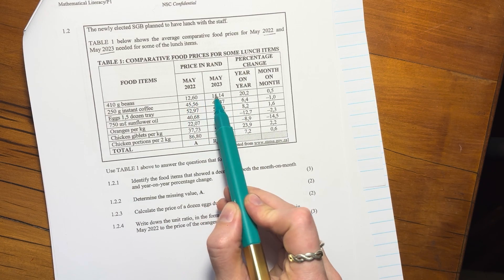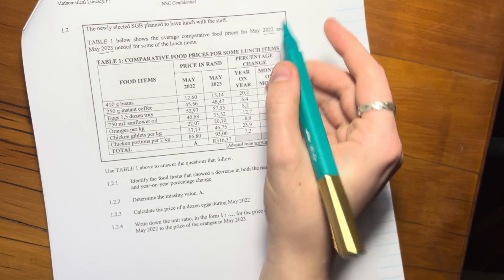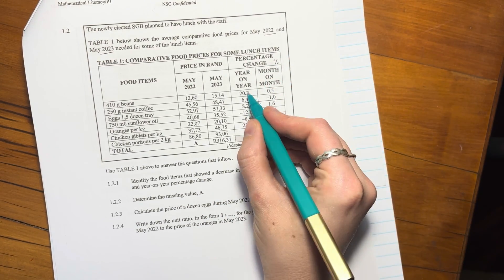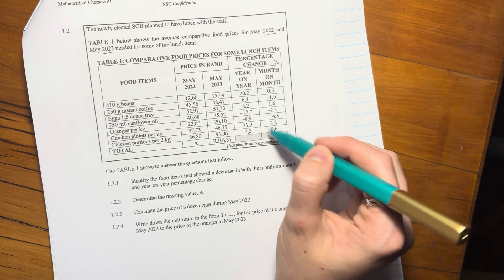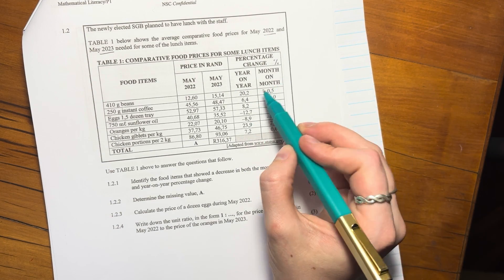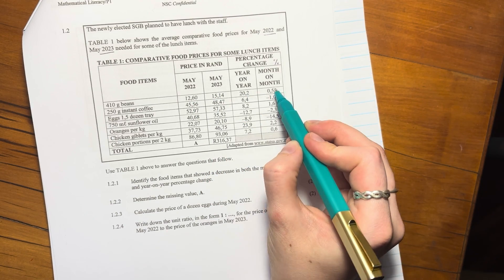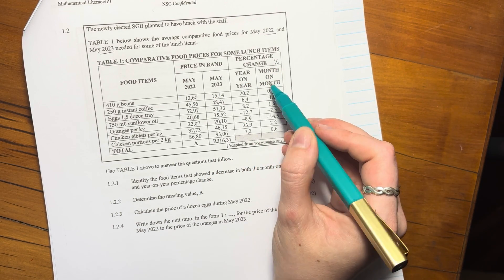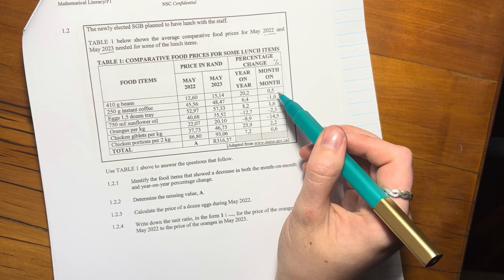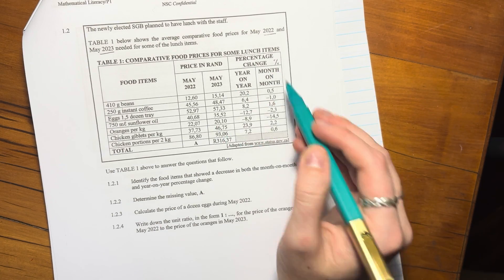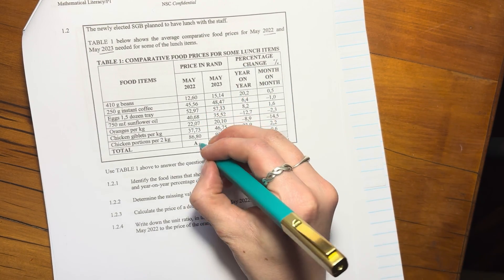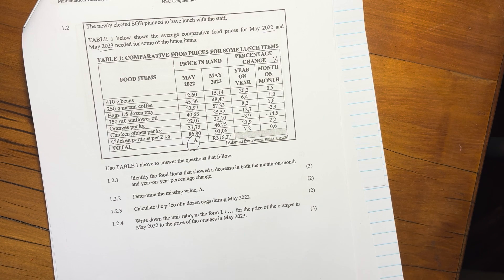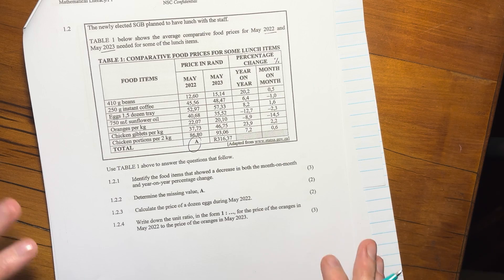Then you have this percentage change, which is effectively just talking about inflation. So saying year on year, how much did it go up from there to there as a percentage. Quite important, there's not a rand amount, from year to year and then month to month. So here it's basically saying that compared to that, and then it's splitting the year to year from a month to month basis.